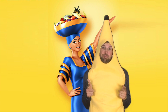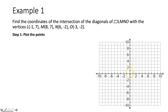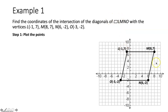Example one: find the coordinates of the intersection of the diagonals of parallelogram LMNO. First we plot the points. L is at (−1, 7), M is at (8, 7), N is at (6, −2), and O is at (−3, −2). There is our parallelogram LMNO.